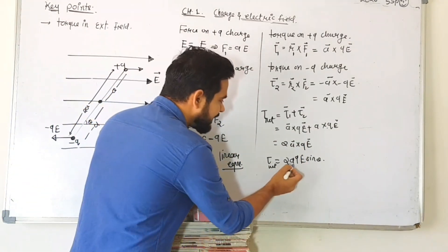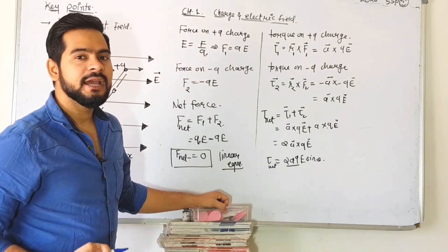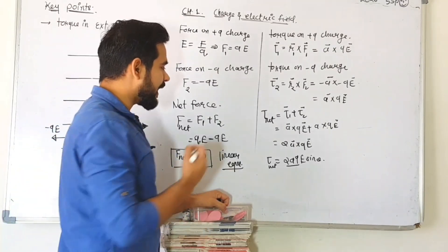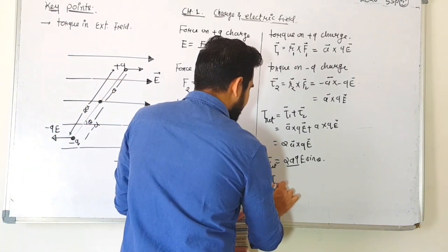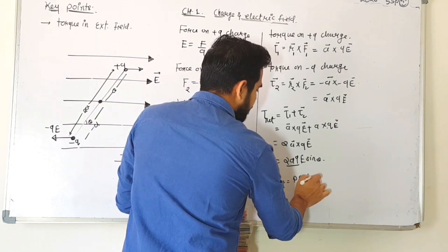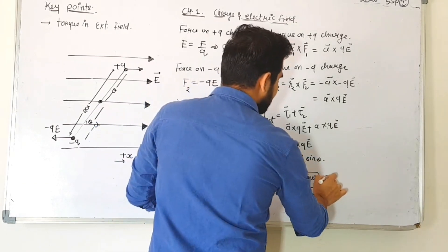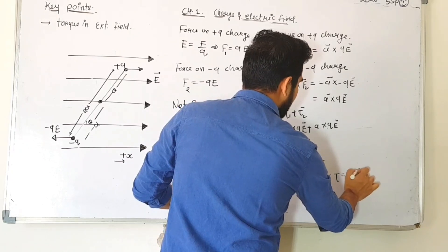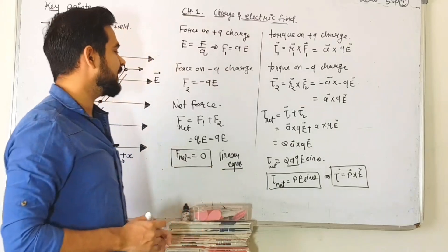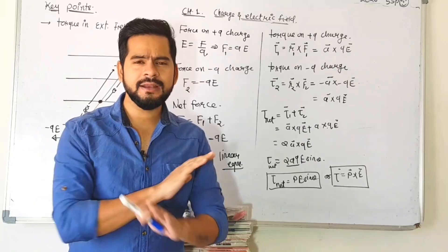Now notice that q and 2a together — any charge q and the distance 2a between them — form the dipole moment p. Therefore, the net torque equation becomes: torque net equals P E sine theta. This is a very, very important equation and you should keep this equation in your mind for lifetime.